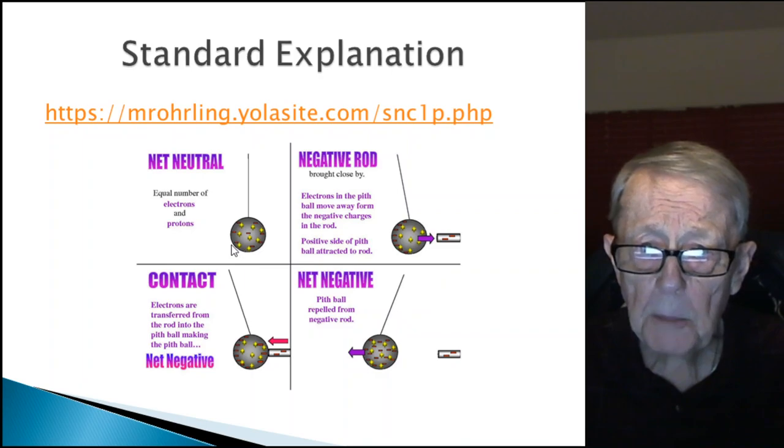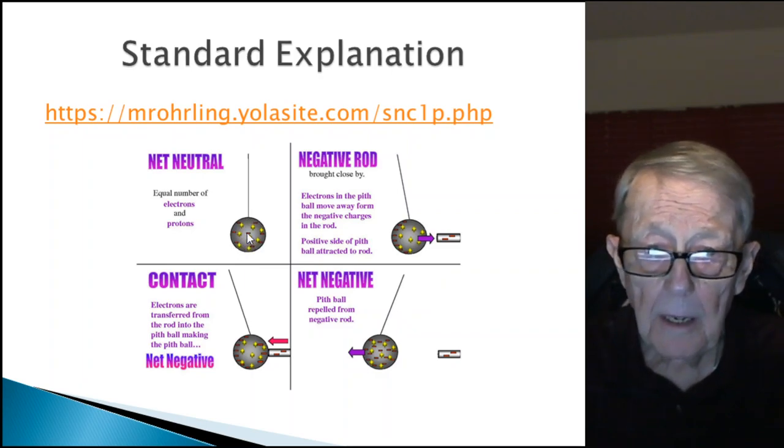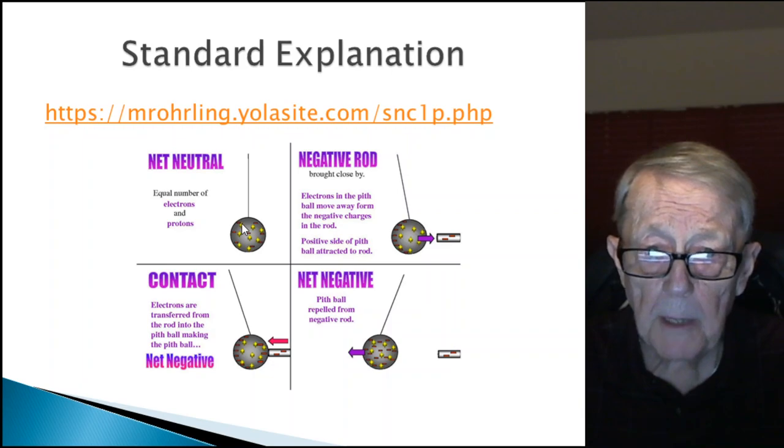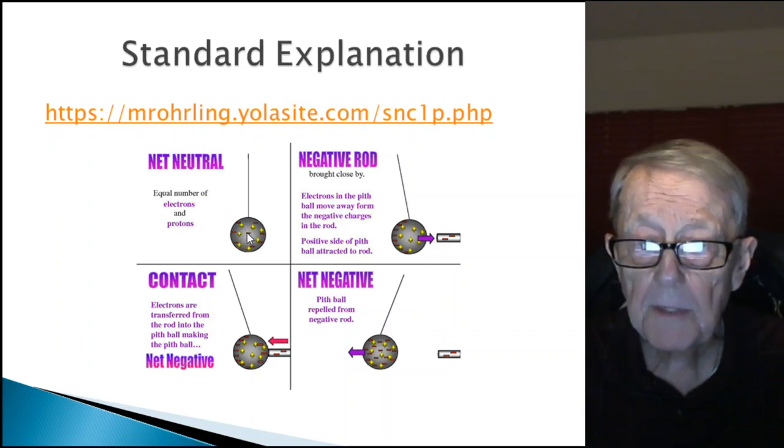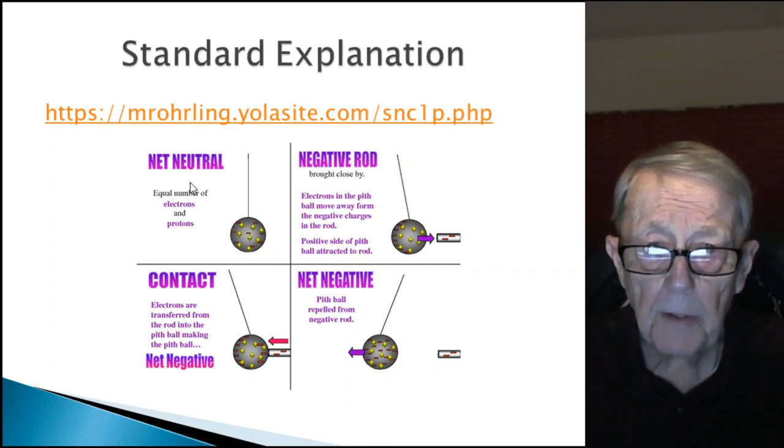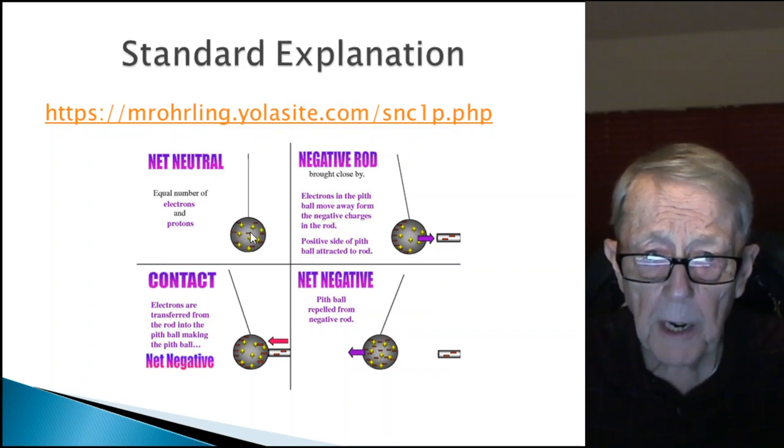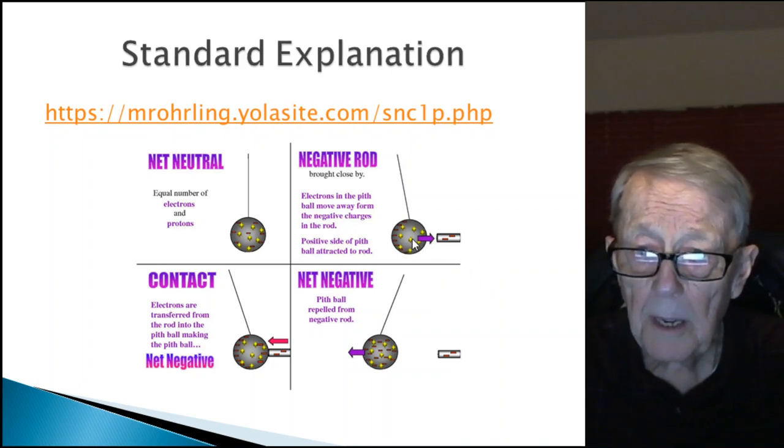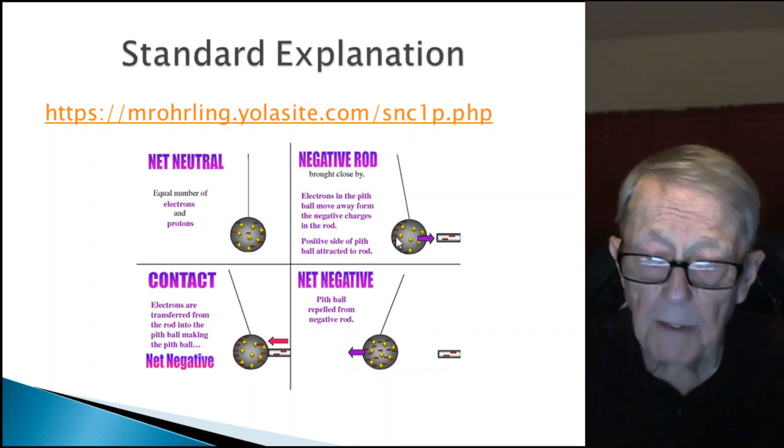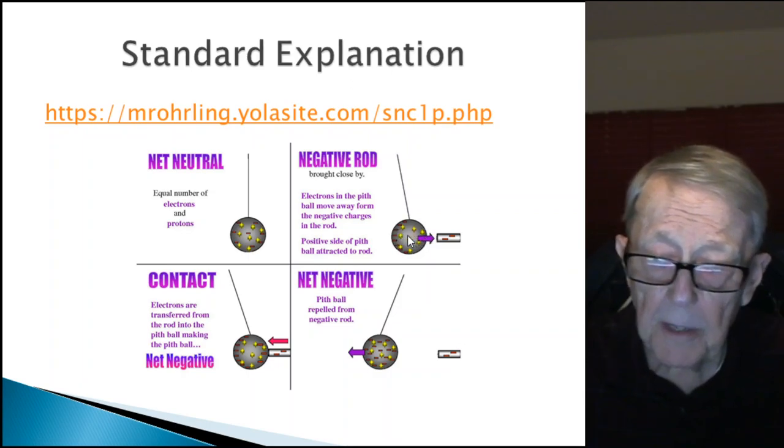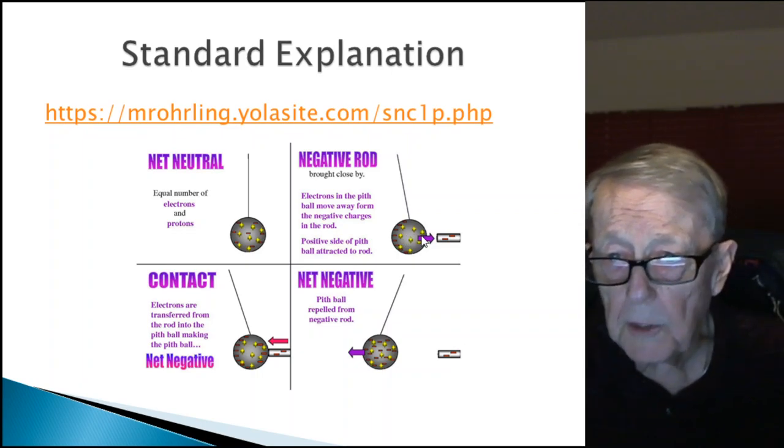Their explanation is basically based on the fact that the pith ball and the rod have atoms. The atoms have a positive charge and negative charge. They tend to have that kind of bipolar balance. For neutral, they're close together and balanced. But when you bring a negatively charged rod next to the pith ball, the negative charge on the rod pushes the negative to the left, leaving the positive to the right.